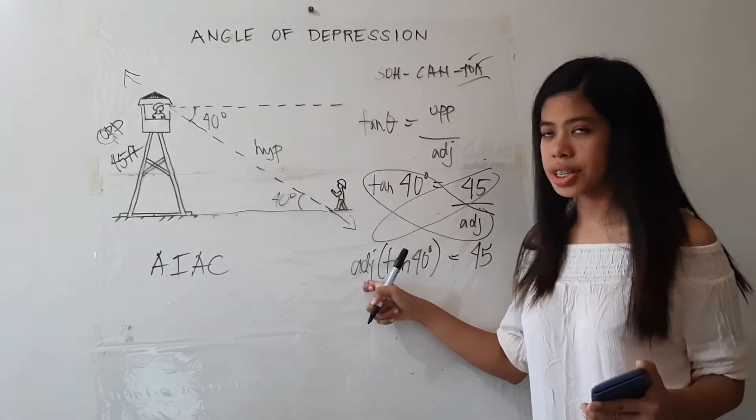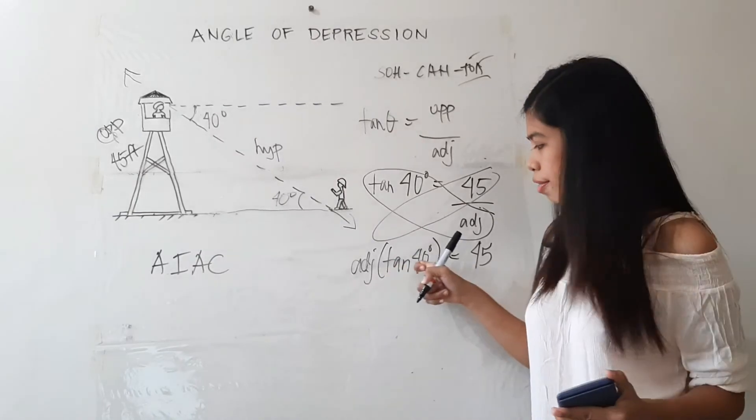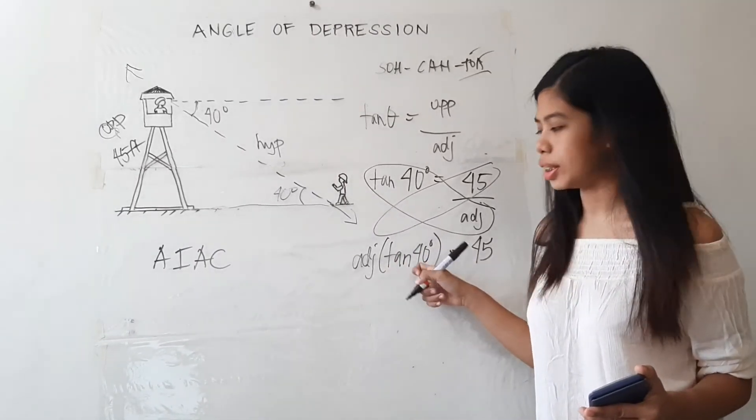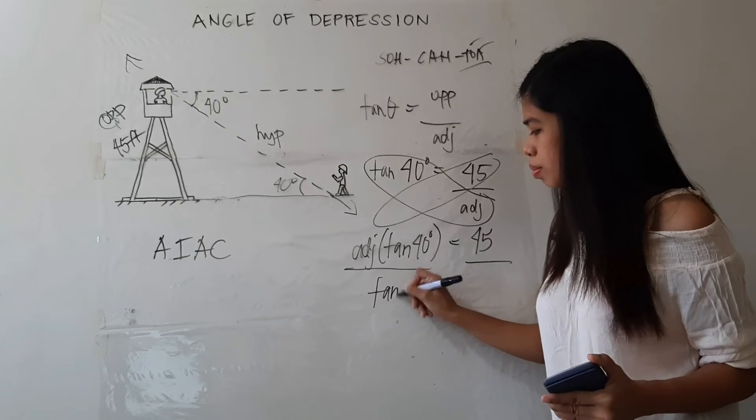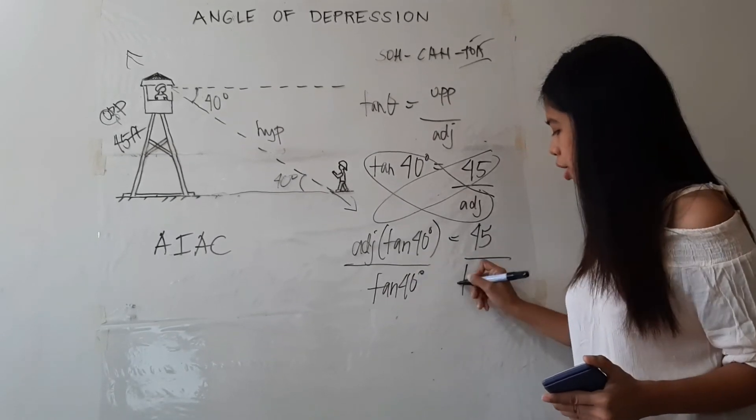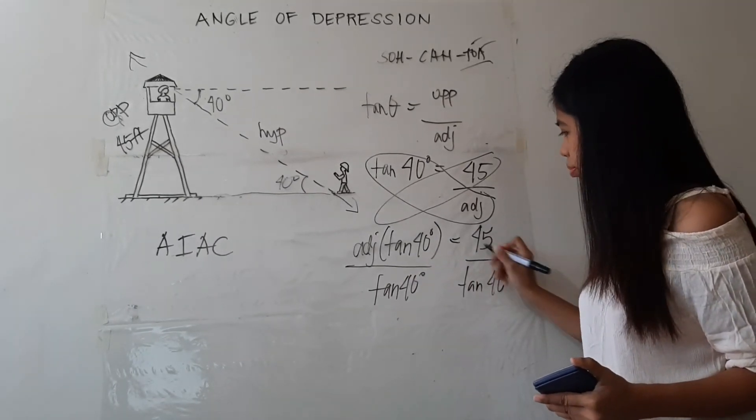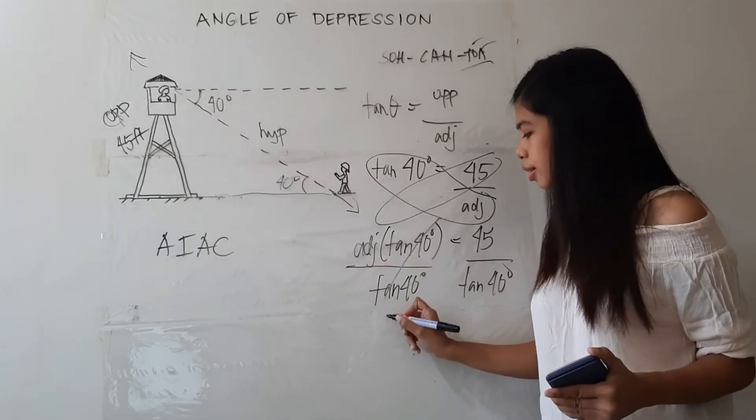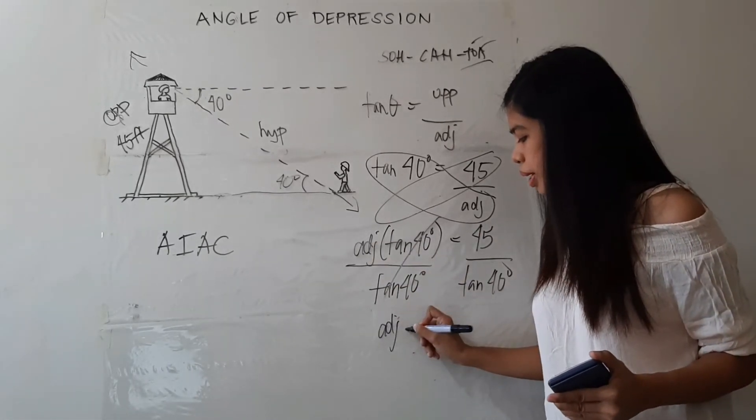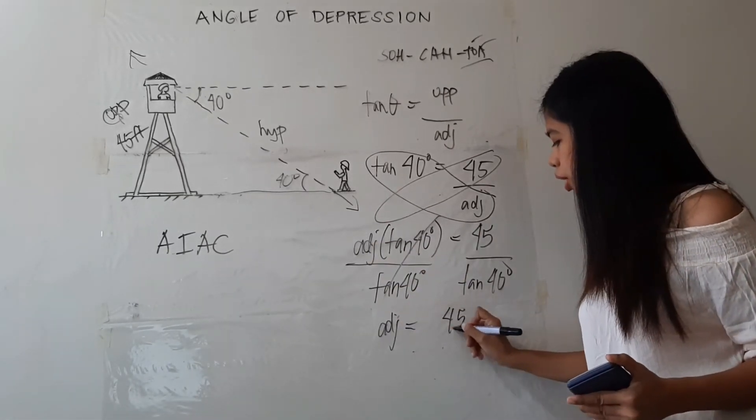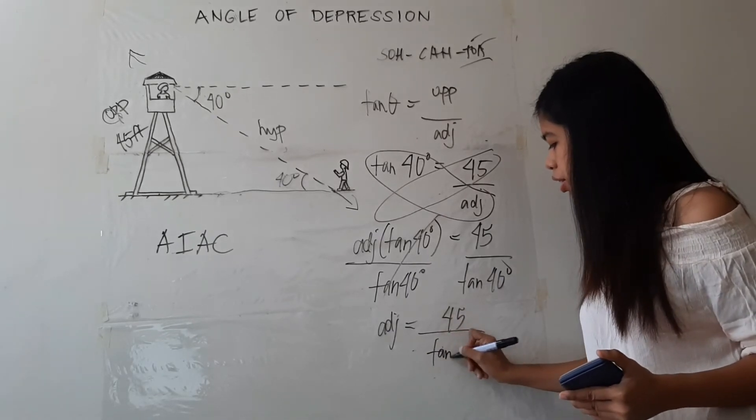Now, since we are just after the adjacent side, we have to eliminate the tangent 40 degrees. How? We may divide both sides by tangent 40 degrees. Eliminated. So the adjacent now would be equal to the quotient of 45 and tangent 40 degrees.